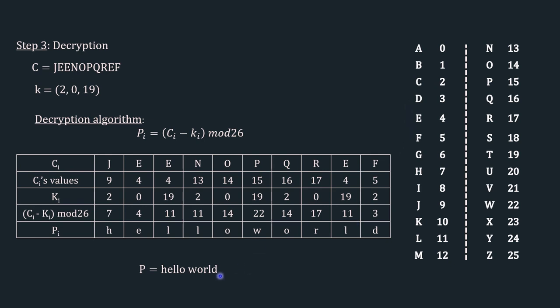We have successfully retrieved our plain text: 'hello world'. Notice that the length of the keyword is 3, so the cipher text is divided into multiple pieces with maximum length 3. Here, JEE represents the first piece, NOP the second, QRE the third, and F the fourth. The significance of this observation will be understood in the cryptanalysis of Vigenère Cipher.